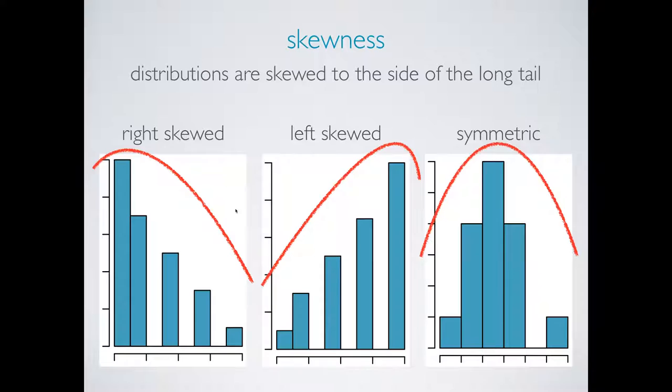As you can see, the best way to assess the shapes of distributions is to step back and imagine a smooth curve outlining the distribution, instead of focusing on the jagged edges of the bars in the histogram.